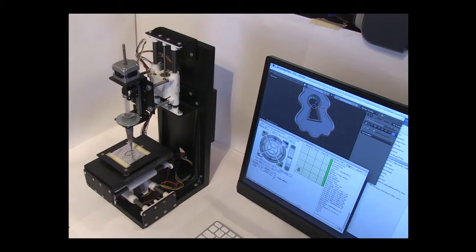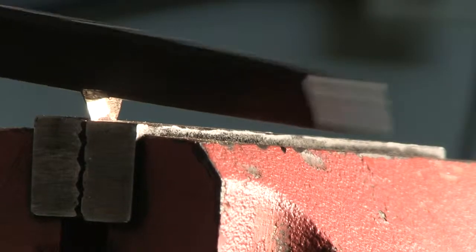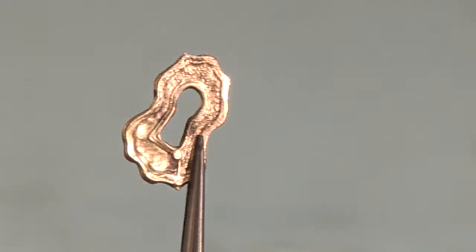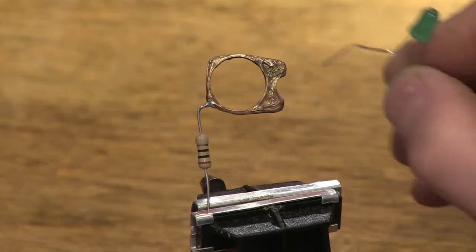Objects printed with the Mini Metal Maker can be bent, filed, polished and drilled. They can also be soldered and even used to conduct electricity.